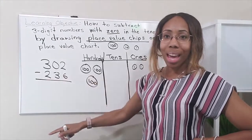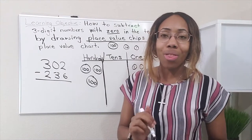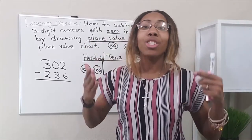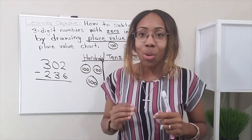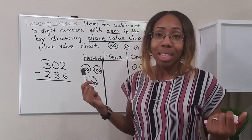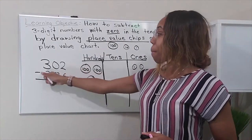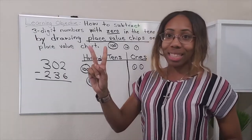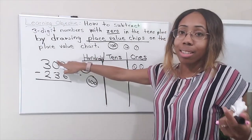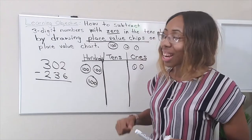Now let's subtract. We're going to take away 236. Always, no matter what, start in the ones place. Start in the ones place — it's so important. If you don't start in the ones place, your answer is completely wrong. So we start at 2 minus 6. You cannot take away 6 from 2, so you have to go to the tens place. But it's a zero — you can't. So now you're going to knock on the hundreds door and ask for a 10.